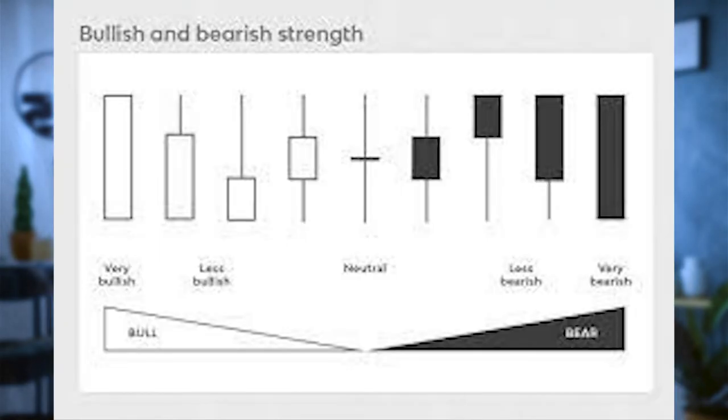Long upper wicks can be an indicator of a bearish trend, meaning that investors are likely looking to sell and take profit. The longer the wick, the stronger the trend. Long lower wicks can be a bullish signal indicating that investors are looking to buy, thereby driving prices upward. The longer the wick, the more reliable the signal.